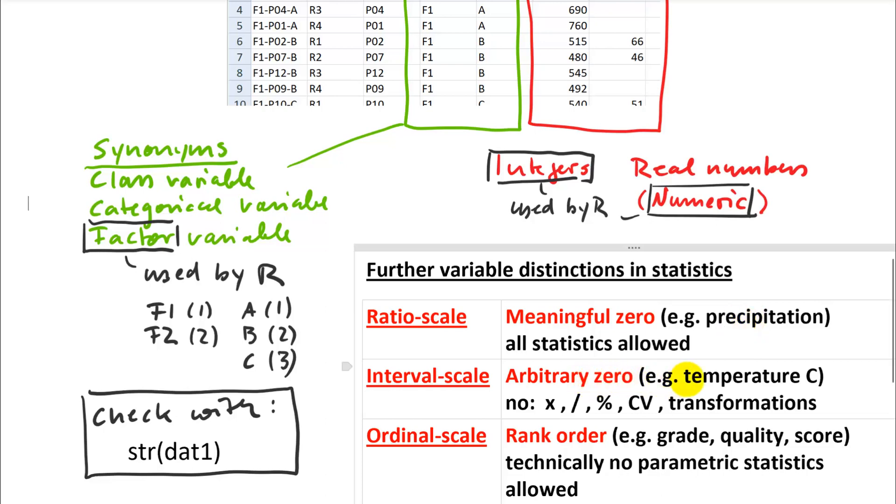For interval scale variable, that's a different story. And so they have an arbitrary zero value. For example, temperature in degrees Celsius would be an example for this. And in that case, you can't do any manipulations or calculations where you multiply or where you divide or where you use percentages. So all statistics that include those things are actually not allowed. For example, a coefficient of variation includes a percentage. So you can't calculate that. You are also restricted in terms of what you can do for data transformations. Otherwise, you create all kinds of artifacts. And I can give you an example. 10 degrees Celsius is not five times as warm as 2 degrees Celsius. So that doesn't make any sense. Because you have an arbitrary zero value that somebody set simply where water freezes.